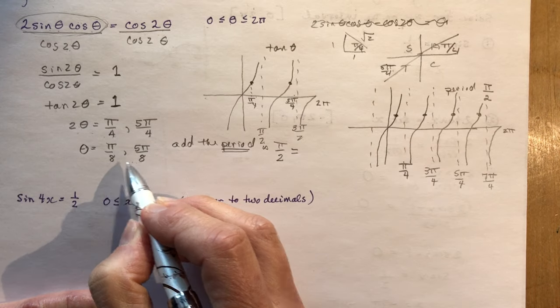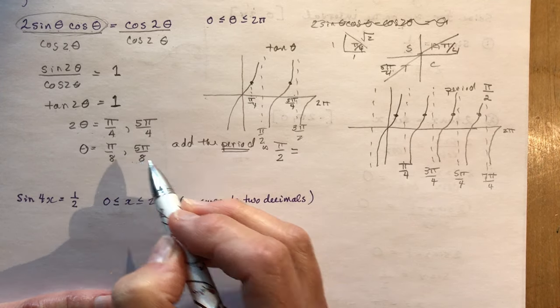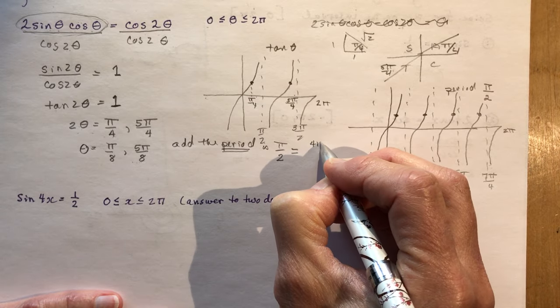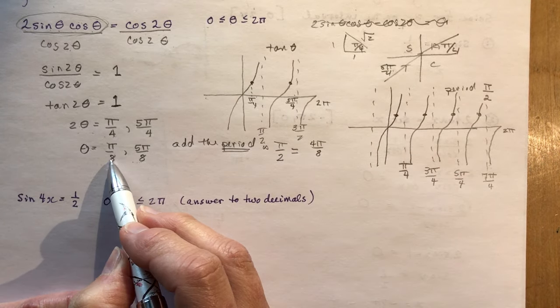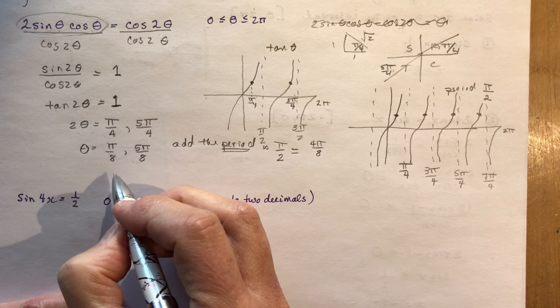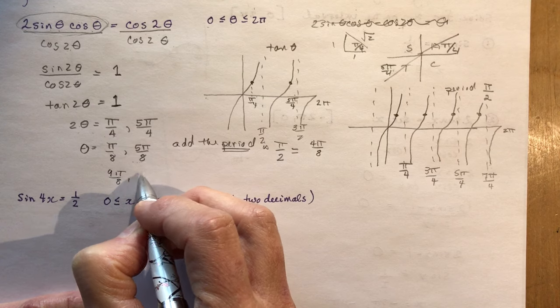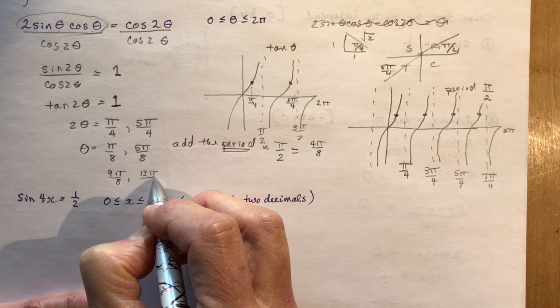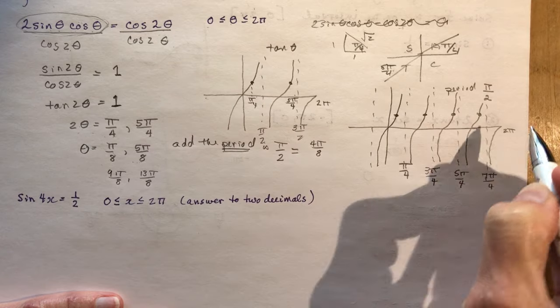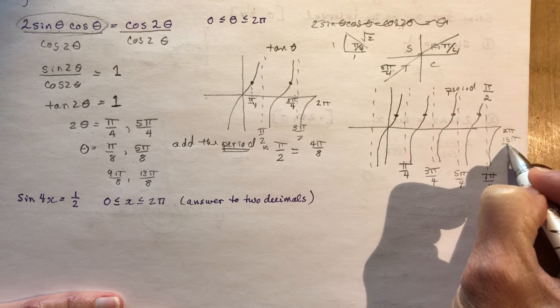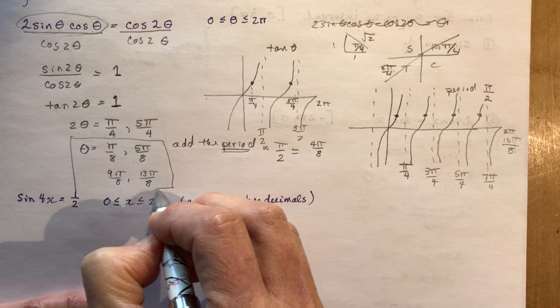The period is π over 2. Or I'm going to write it with a base of 8, because I'm adding it to these fractions anyway. So that would be 4π over 8. So I have π over 8. 5π over 8. Keep adding. 9π over 8. 13π over 8. 17π over 8? No, that's passed. 16π over 8? That's this one here, right? That's 2π. So I have to stop. So here's my 4 solutions here.